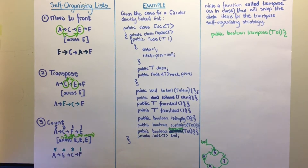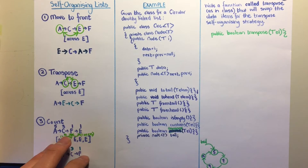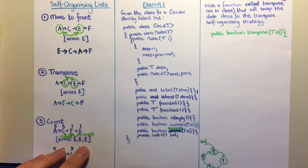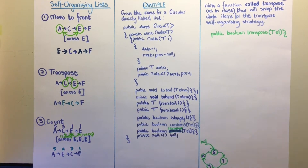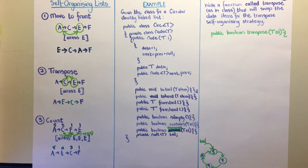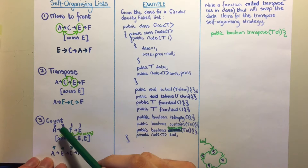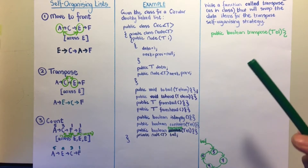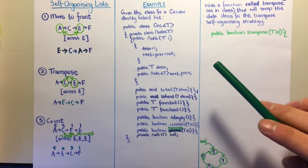If E is accessed again, it has been accessed twice but C has been accessed three times, so no swap occurs yet. If E is accessed yet again, it has now been accessed four times, which exceeds C's three, so E and C are swapped, resulting in the order: 5, 4, 3, 1 — A E C F.